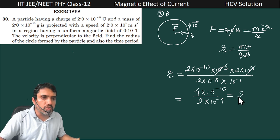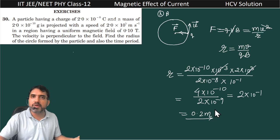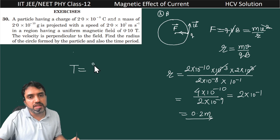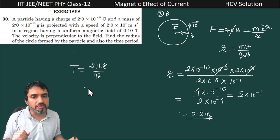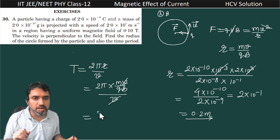We get 2 × 10⁻¹, which is equal to 0.2 meter. So 0.2 m is the radius of the circular path. If we want to find the time period, it can be written as the total distance covered — the circumference 2πr — divided by velocity v. We can substitute r = mv/qB, so T = 2π × (mv/qB) / v.